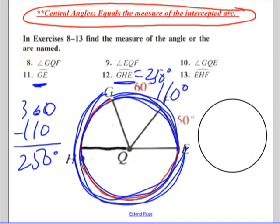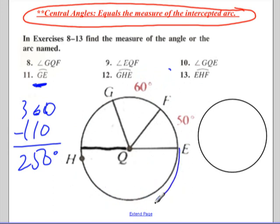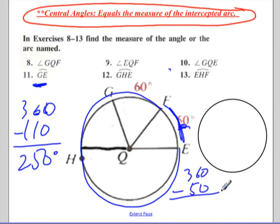Finally, arc EHF. I'm going to erase again and make some room. Arc EHF, so that's this whole thing. The easiest way to figure that out is it's everything but this. So if that's 50, it's just 360 minus the 50, which leaves us with 310 degrees. And that's it for now. We'll see you again later. Bye-bye.